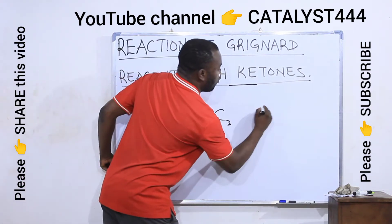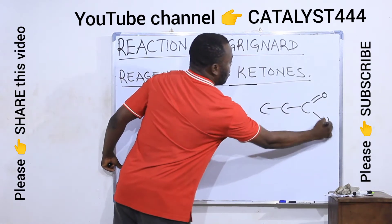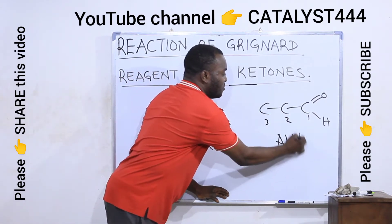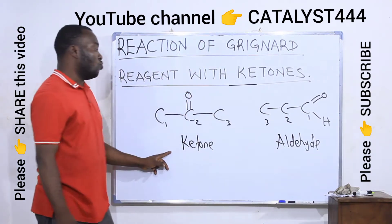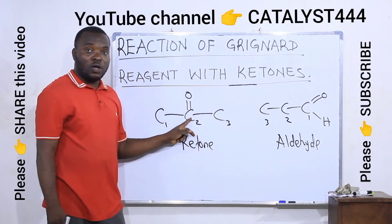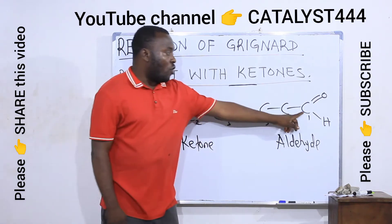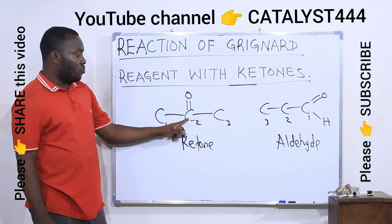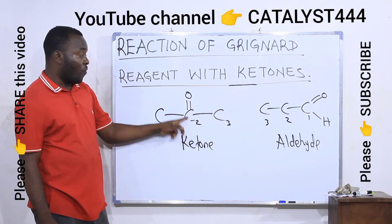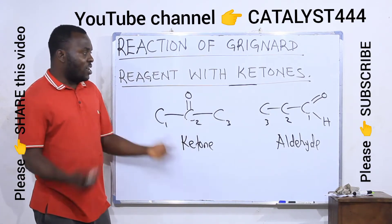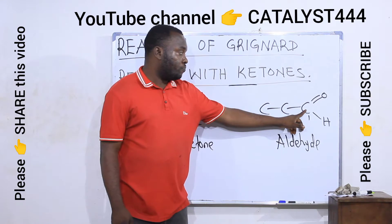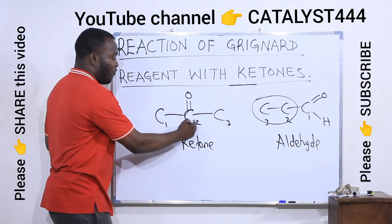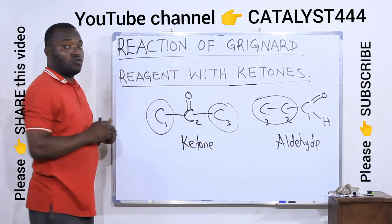When the carbonyl functional group is located outside — in front of the chain — the compound is an aldehyde. So both aldehydes and ketones share the same type of functional group. The major structural difference is that the carbonyl functional group of an aldehyde carries a hydrogen atom, while the carbonyl functional group of a ketone does not have a hydrogen atom.